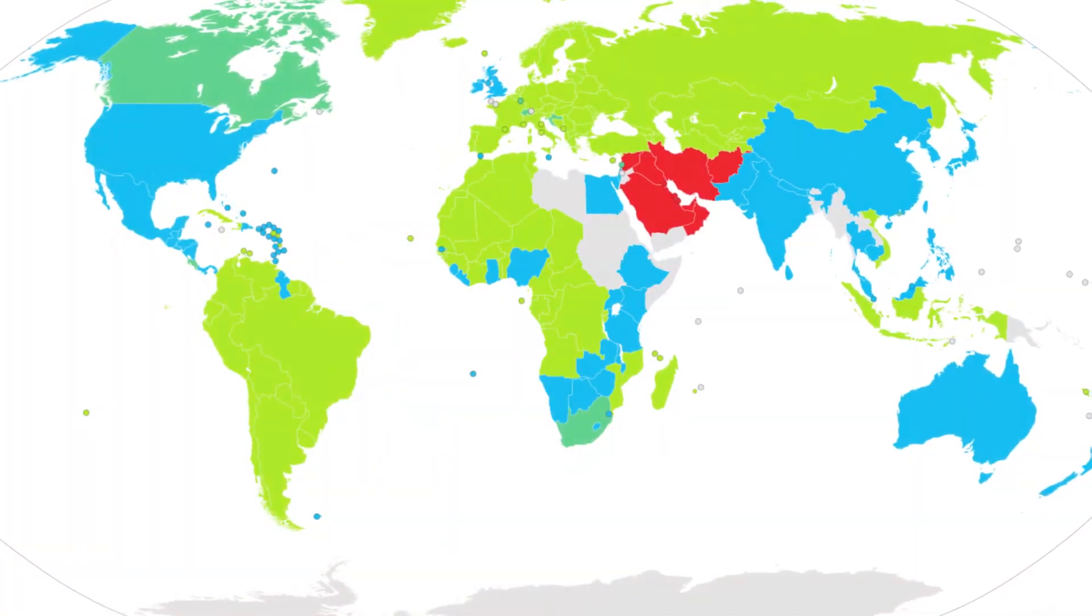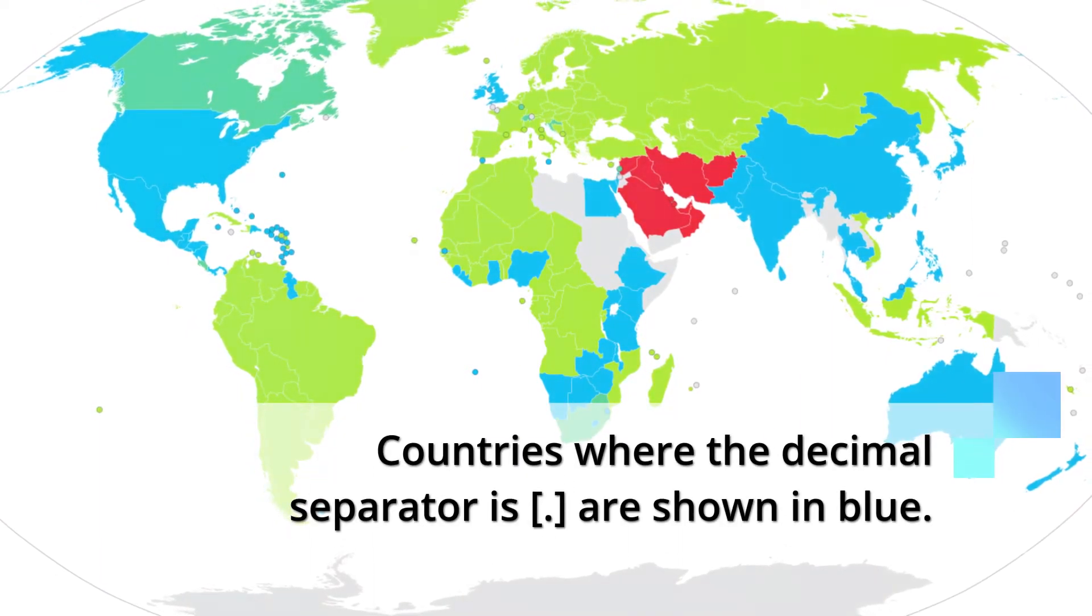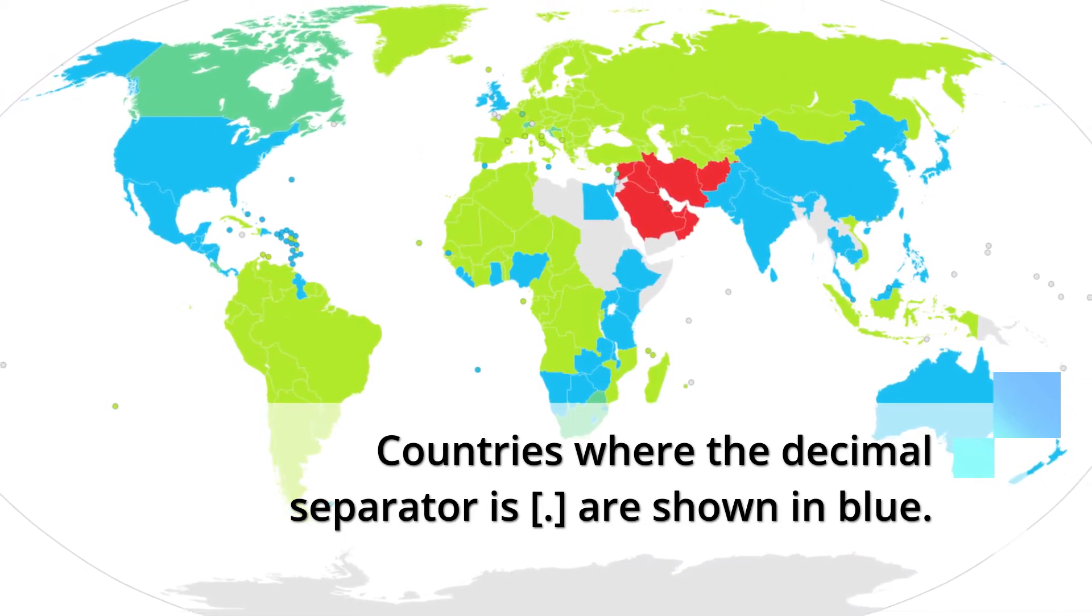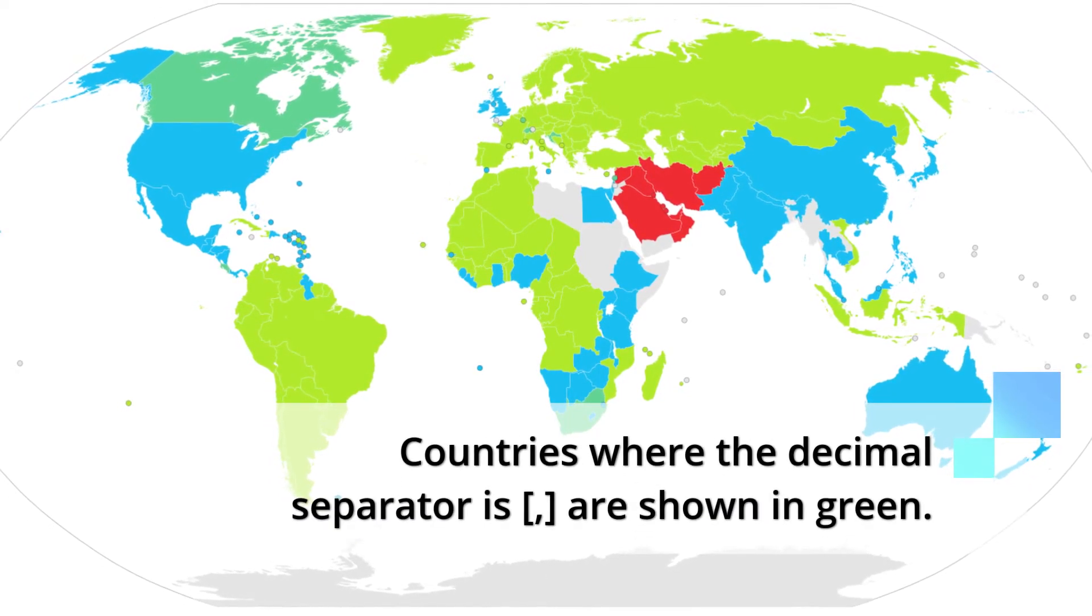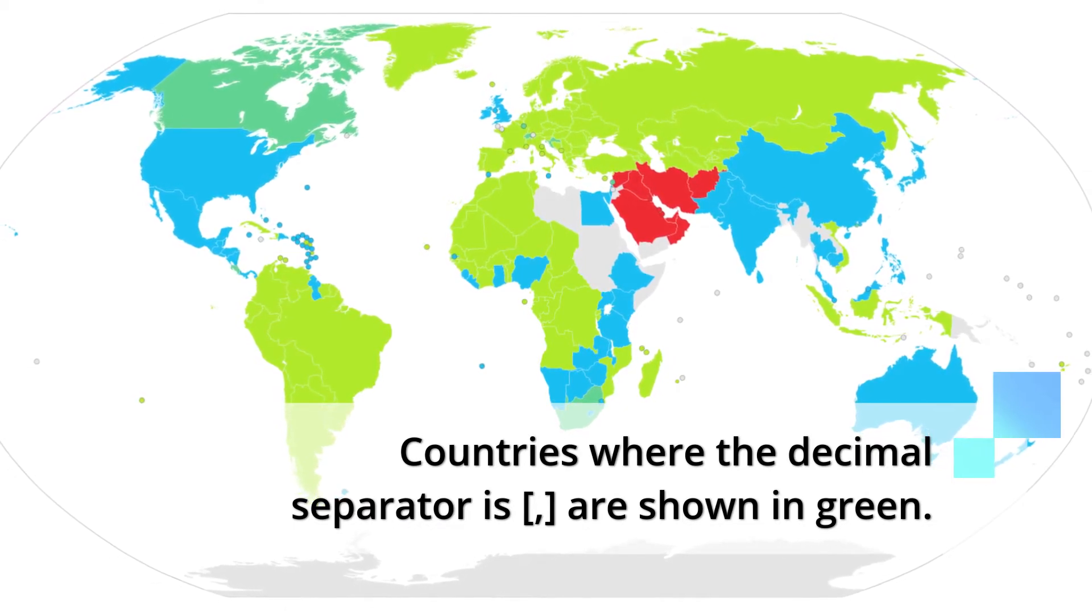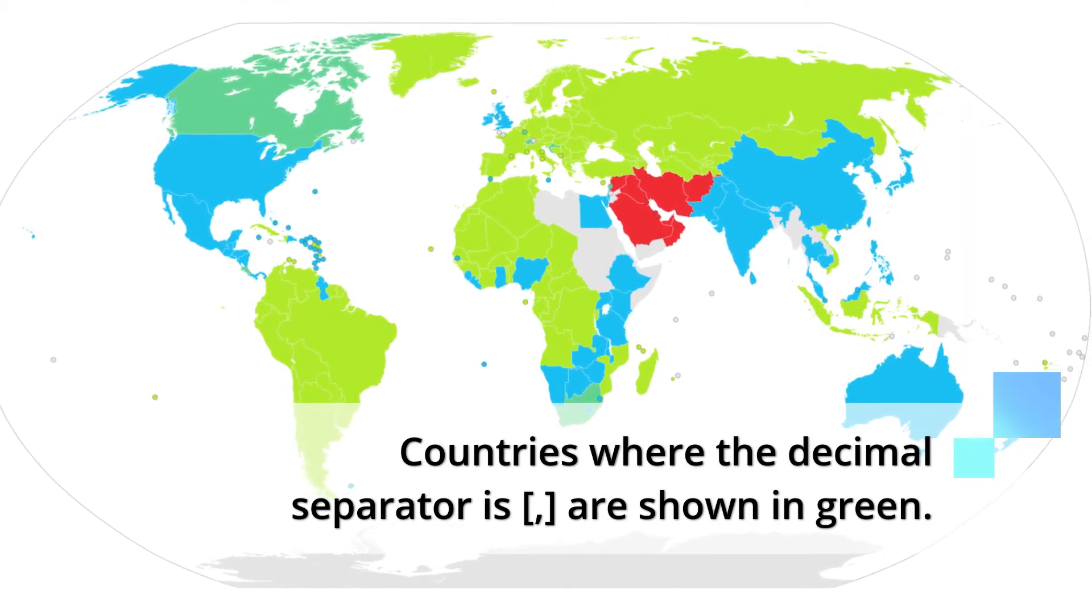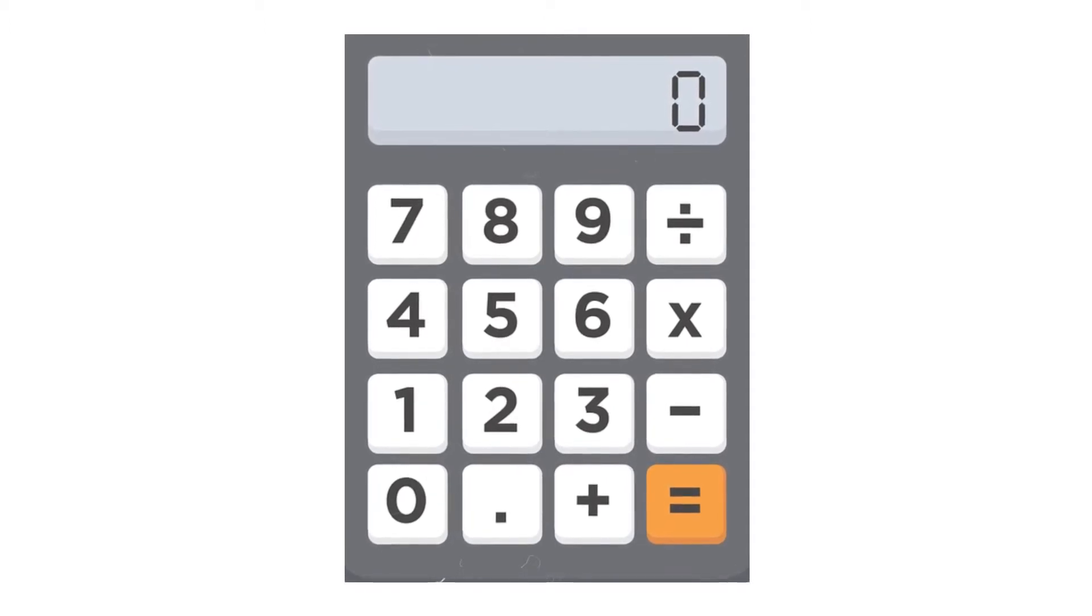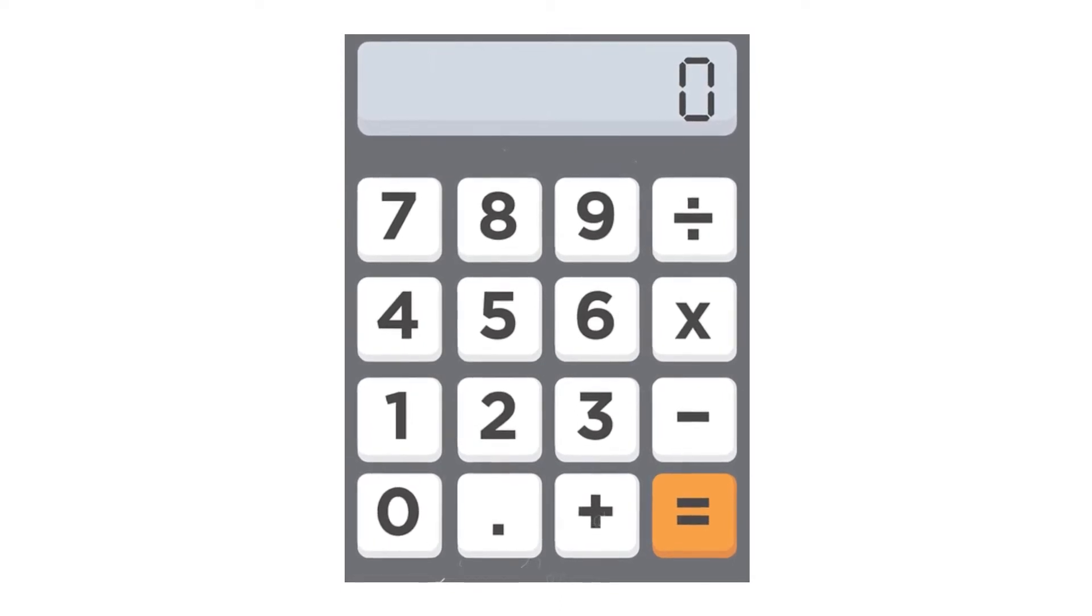However, the world is divided on this. In this map, countries where the decimal separator is the dot or point is shown in blue, including the United States, England, India, Australia, and so on. Whereas the countries where the decimal separator is a comma is shown in green. For example, much of Europe, including Russia, Indonesia, Brazil, and the rest of South America as well. So when you do come from these countries highlighted in green, you must make a mental note when learning English. Because the decimal separator is the point or dot in English, while the thousandth separator is the comma.